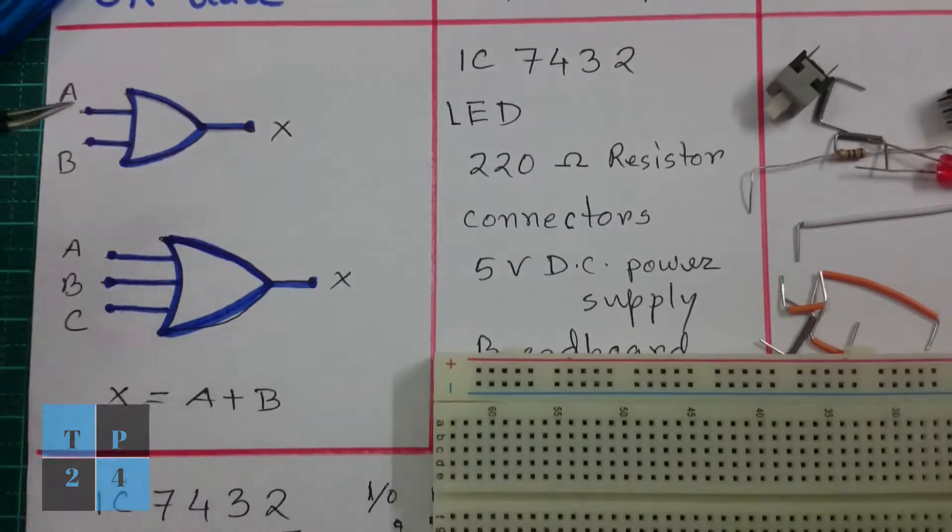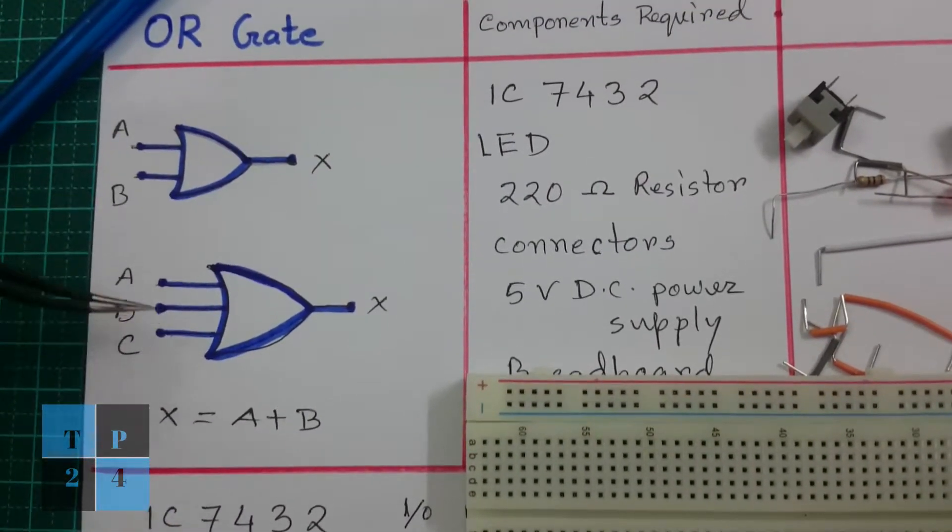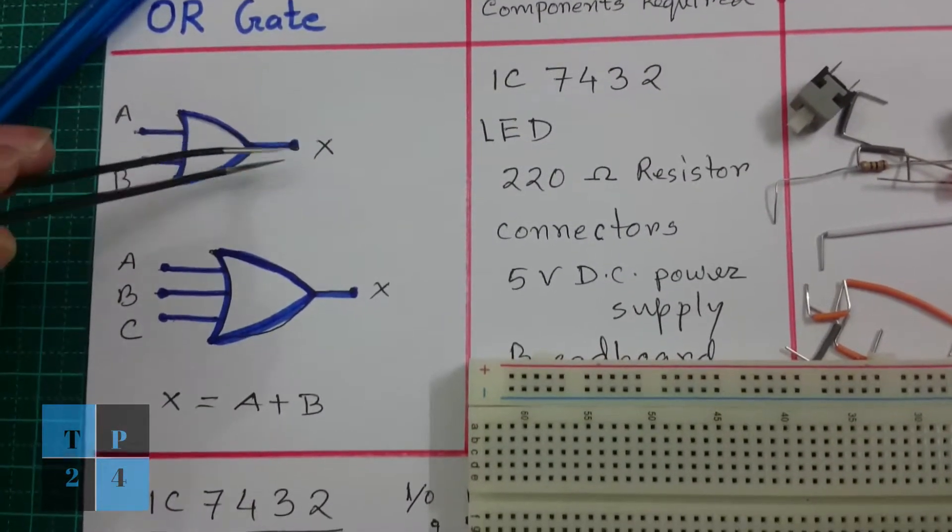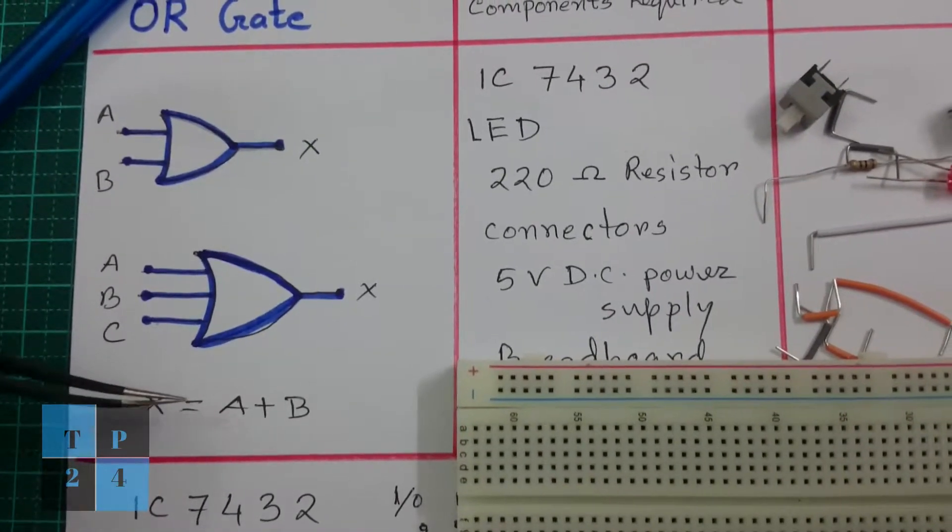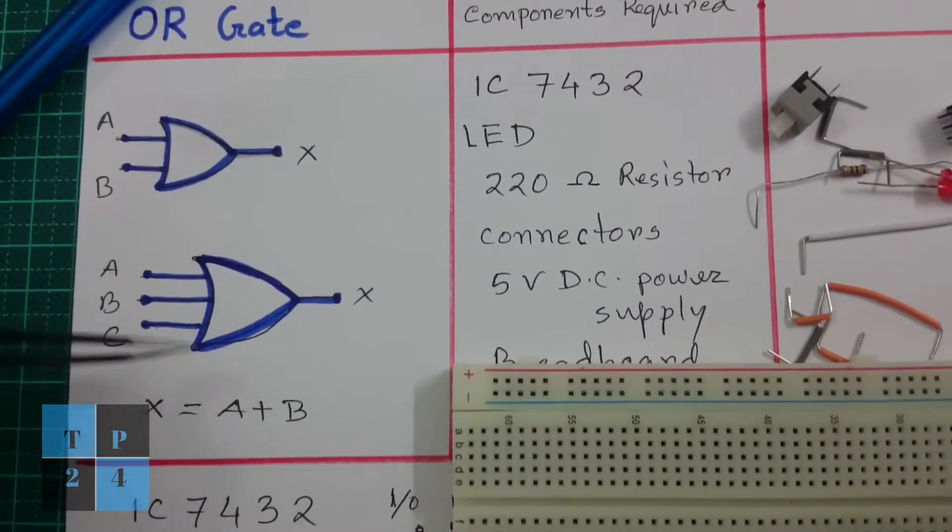This is an OR gate. Here we have two inputs or three inputs of an OR gate and one output. Here is the Boolean expression: X equals A plus B. It is the addition.